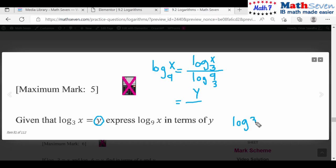9 is itself 3 squared to the base 3. Now the square brings down to 2, so it becomes 2 log 3 base 3. That equals 1, so 2 times 1 is 2, which gives us y over 2.